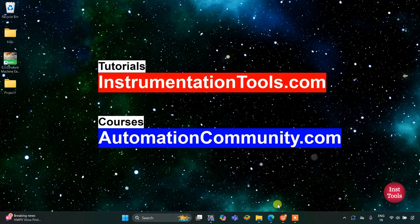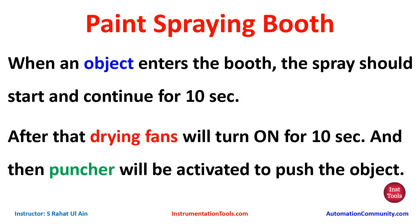Hello everyone, welcome to Automation Community. Today in this video we are going to discuss an example about a paint spraying booth. When an object enters the booth, the spray should start and continue for 10 seconds. After that, drying fans will turn on for 10 seconds, and then a puncher will be activated to push the object out.